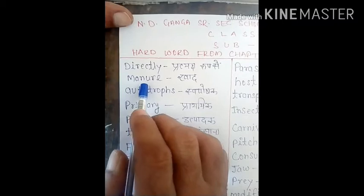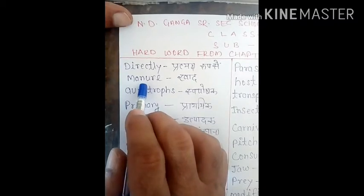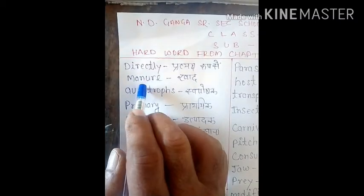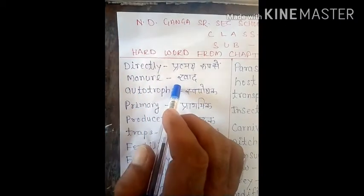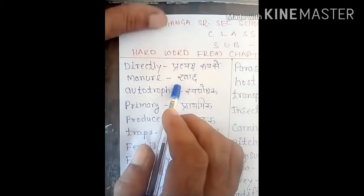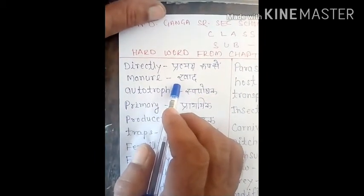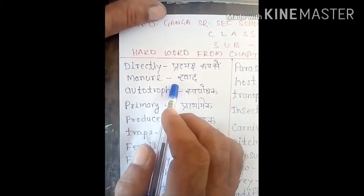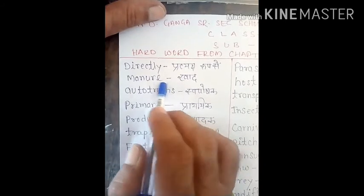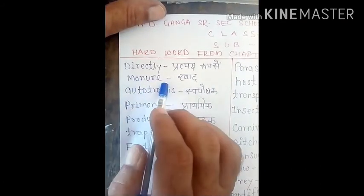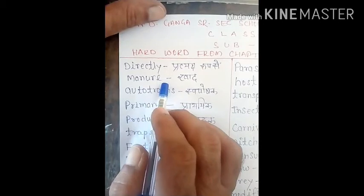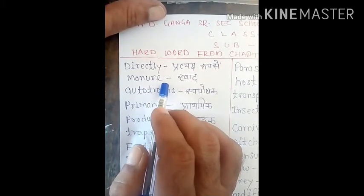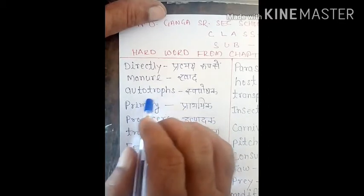Next word is 'manure', M-A-N-U-R-E. Manure means 'khad'. We generally call them cow dung, buffalo dung, dry leaves, or domestic waste se jo khad banaate hain usko hum bolte hain manure. Jo hum market se buy karte hain, that we call fertilizers, jaise urea and nitrogen — ye word bhi aayega.